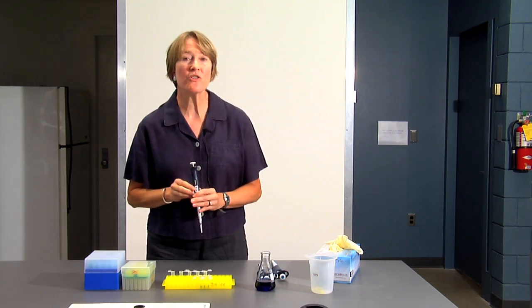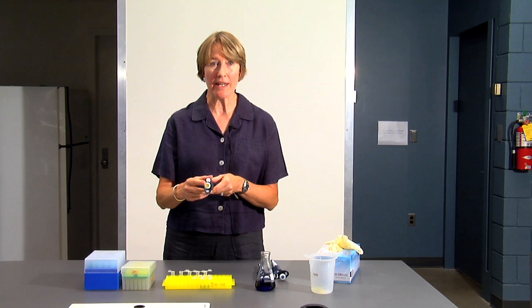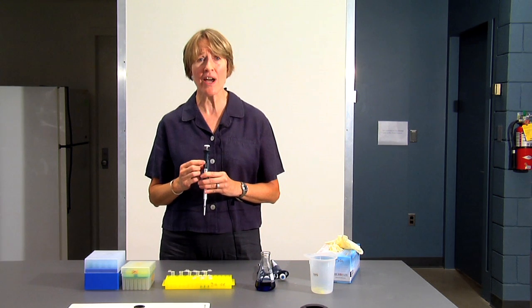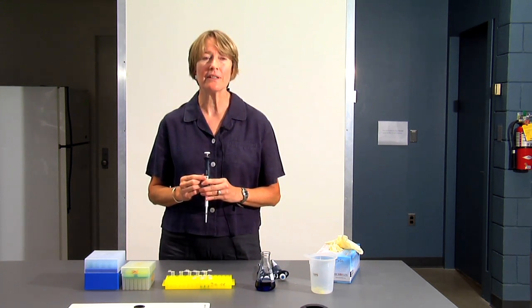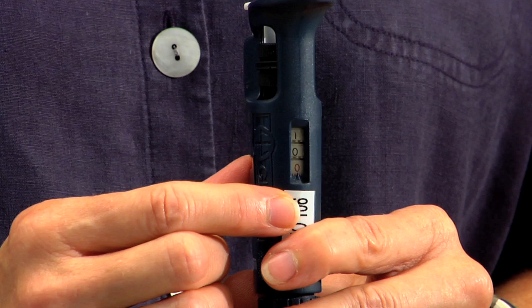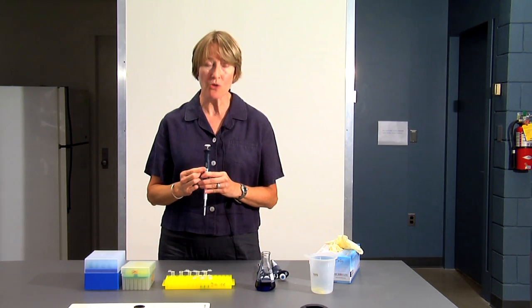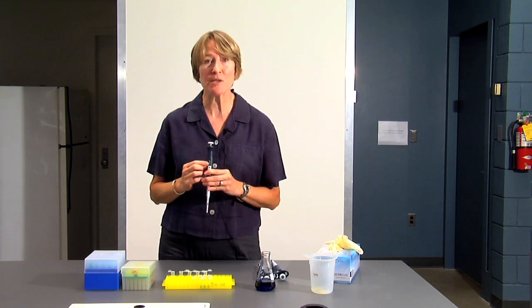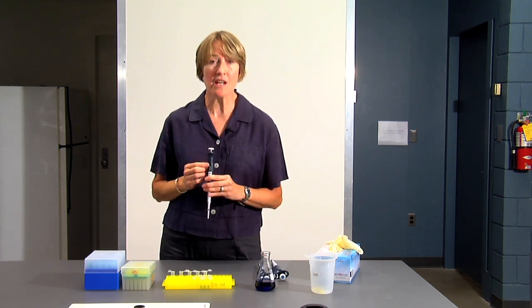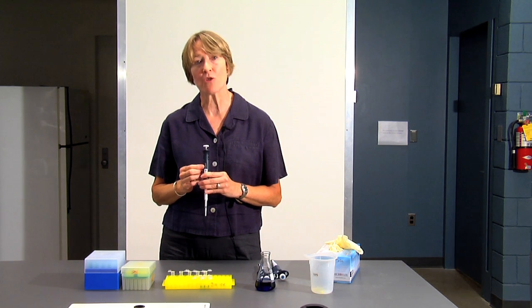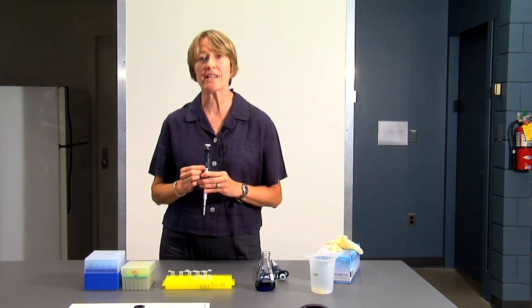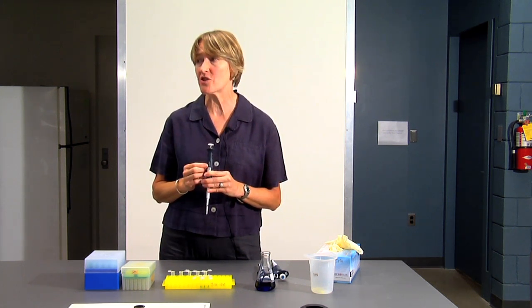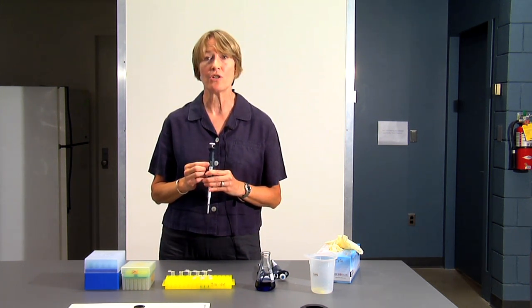The third pipette that we'll be using is the P20, which measures accurately 2 microliters to 20 microliters. This also has three numbers on the barrel, but notice that the bottom number is in red. That is an alert that tells you that bottom number is tenths. So there's a decimal point before that number. So if the dial reads 100, that stands for 10.0 or 10 microliters. If you wanted to measure 2 microliters, you'd set the dial on 020.